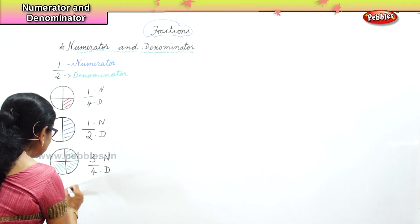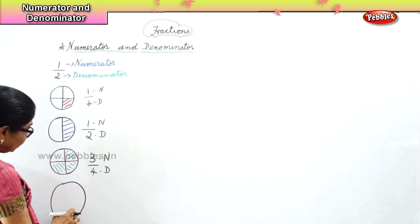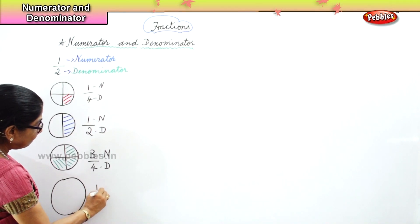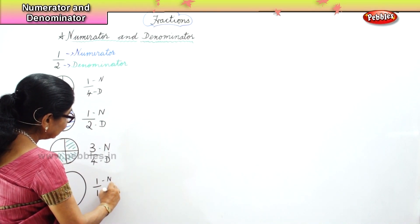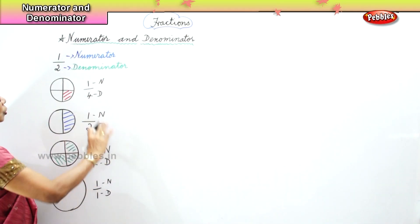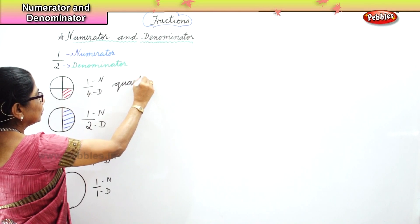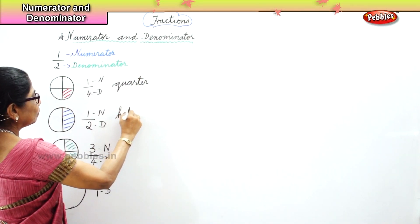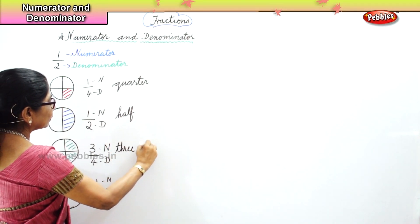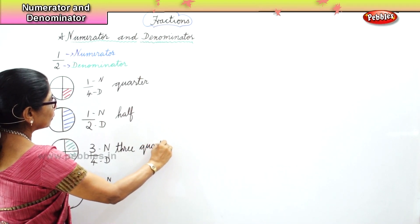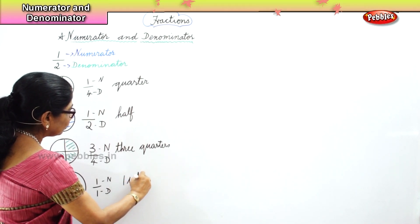This full circle is called one by one — this is one whole. The numerator is one and the denominator is one. So we have quarter, half, three-quarter, and one whole. The top number is the numerator and the number below the line is the denominator.